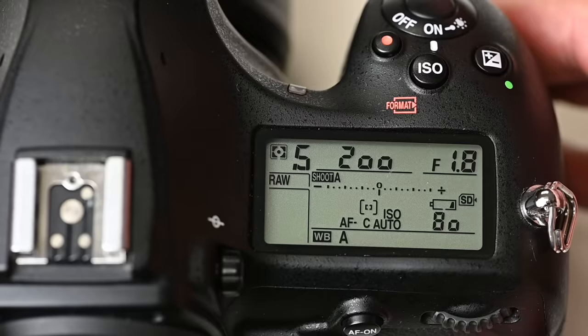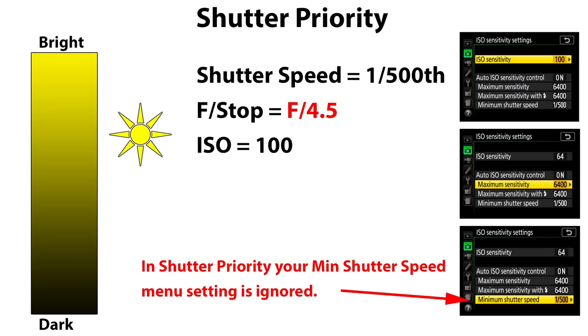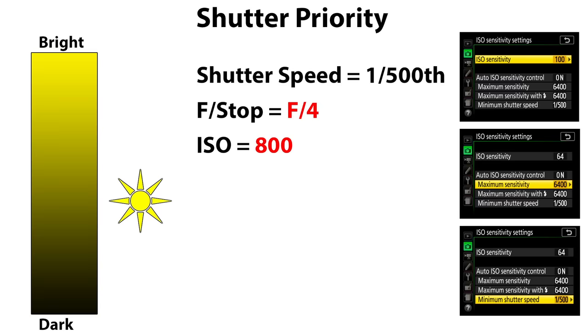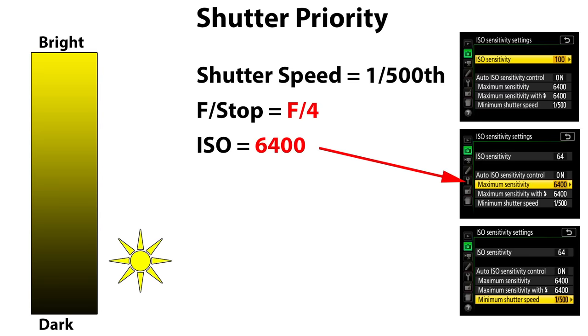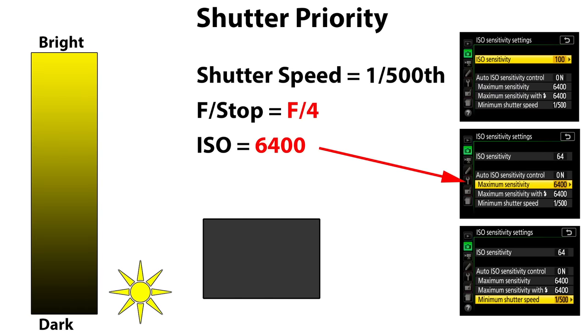For shutter priority it works in much the same way except the camera will use f-stops rather than shutter speeds. Let's say we're doing the sunny day example in shutter priority mode, setting 1/500th of a second with the command dial — remember the camera ignores the minimum shutter speed from the ISO sensitivity menu when you're using shutter priority. The camera sets the f-stop to f7.1 for our normal ISO of 100. As the day grows dimmer the camera opens up the lens a little at a time until it reaches the widest stop available — in this case f4. Once it has no more f-stops it turns to ISO and starts increasing it as the day gets dimmer. Once the camera reaches your maximum ISO setting in shutter priority it has nowhere else to turn — it can't open the lens more and it can't go beyond your maximum ISO, so it's forced to underexpose.